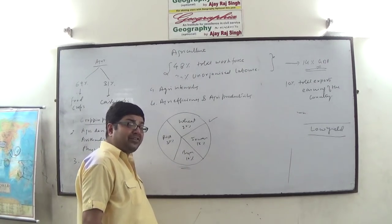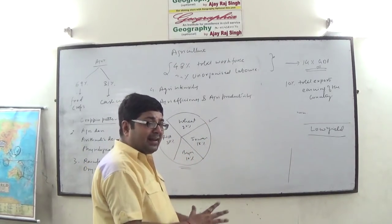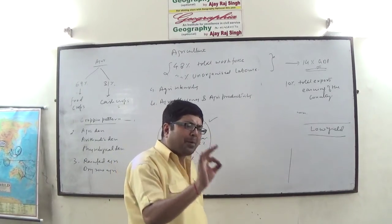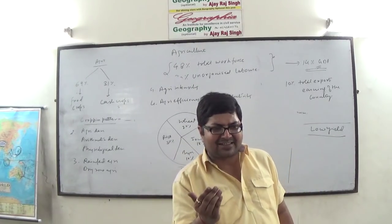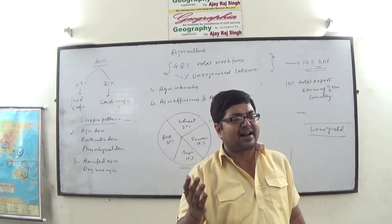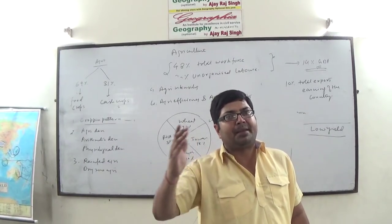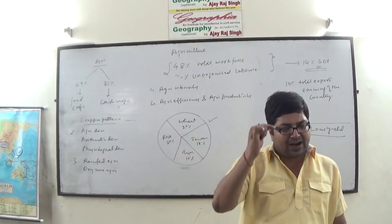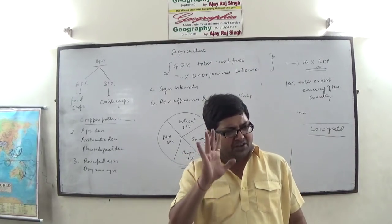What is crop combination regions? In any region, a number of crops are grown. Whichever crop occupies the largest area is known as the first ranking crop; the crop that occupies the second largest area is the second ranking crop; and the crop occupying the third largest area is the third ranking crop. These three crops are known as the dominant crops of a region.